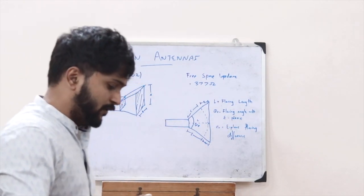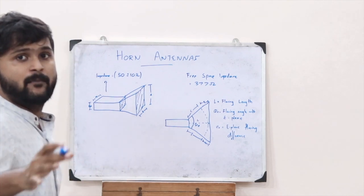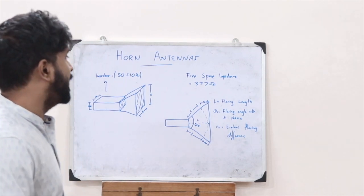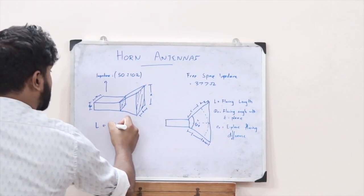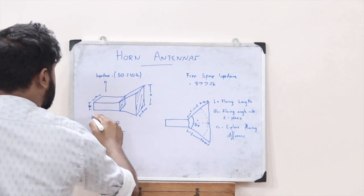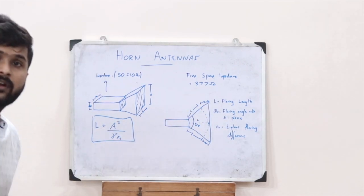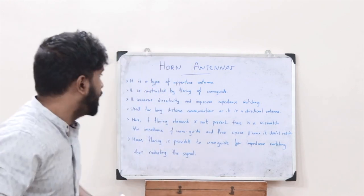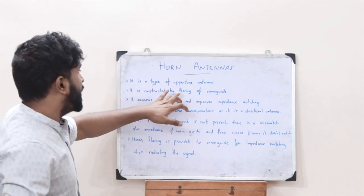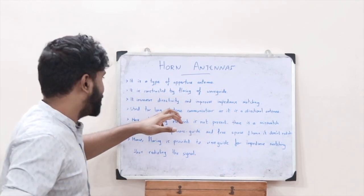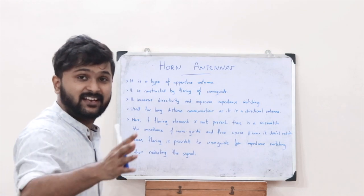So L is the flaring length, theta E is the flaring angle with the E plane, and delta E is the E plane flaring difference — these are the different parameters. By considering this as a right-angle triangle and applying Pythagoras' theorem, we get the flaring length L as: L equals A squared divided by 8 delta E. A horn antenna is a type of aperture antenna constructed by flaring of the waveguide, which increases directivity and improves impedance matching.